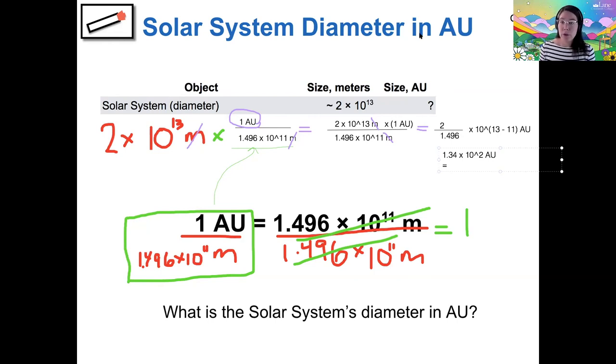So I end up with 1.34 times 10 to the 2 AU. And if I wanted to express this back in standard form again, I would need to move my decimal over by two places in order to get rid of that 10 to the 2. And so I would end up with 134 AU. So that's the total extent of our solar system.